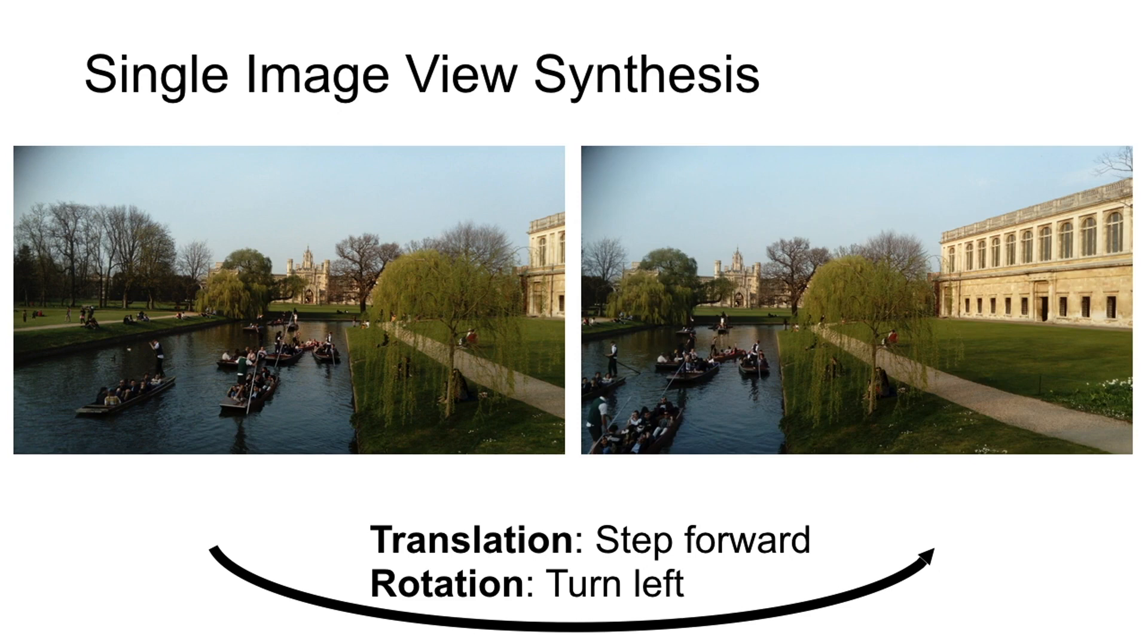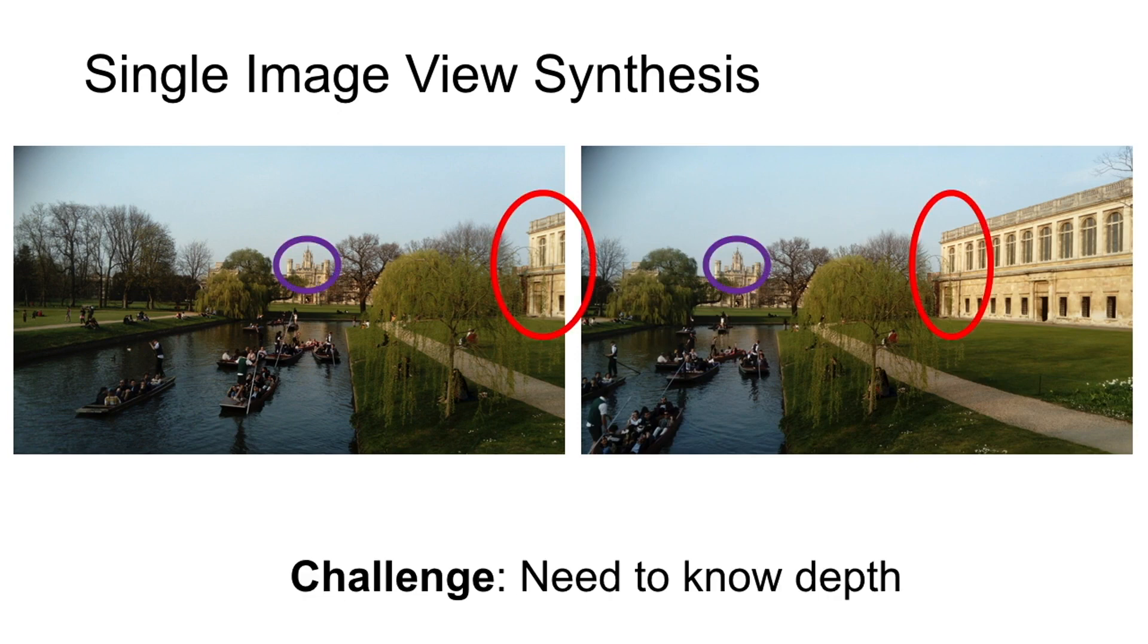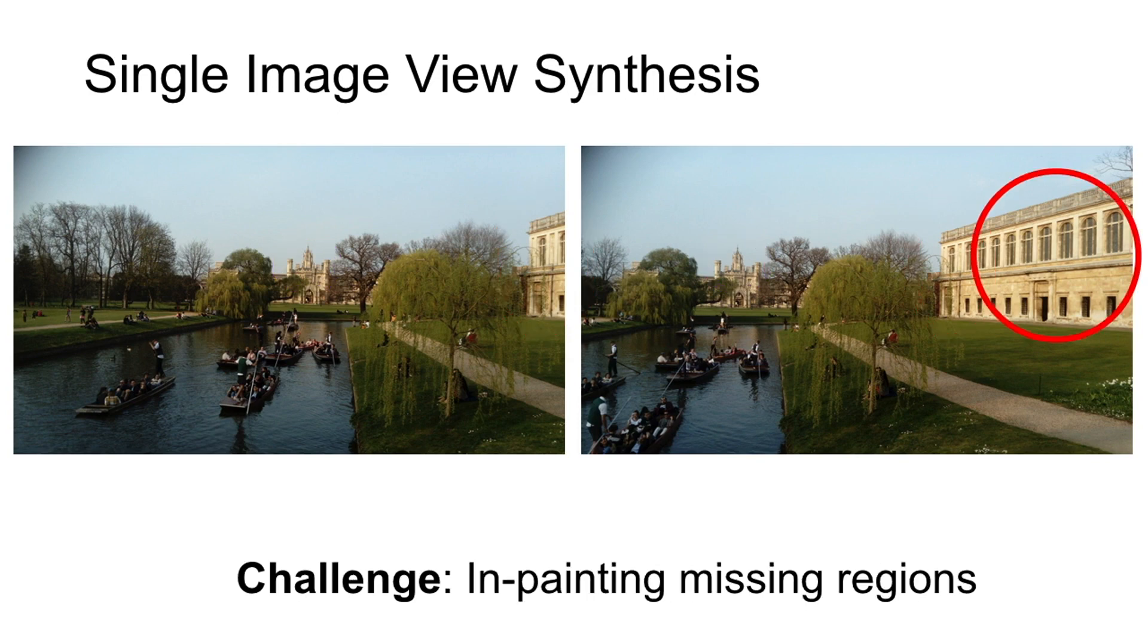To solve this problem, our model has to learn about two aspects. First, it must understand the 3D structure of the scene to manipulate the pixels. The model must also understand context in order to inpaint missing regions, such as the famous Wren library shown here.